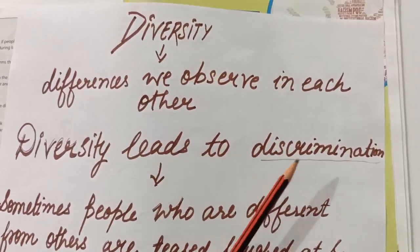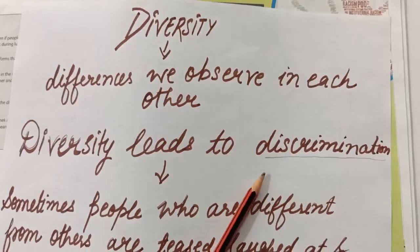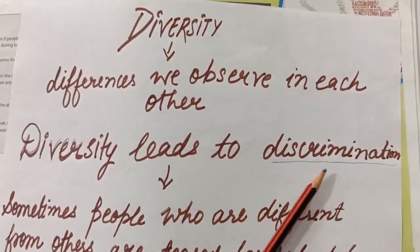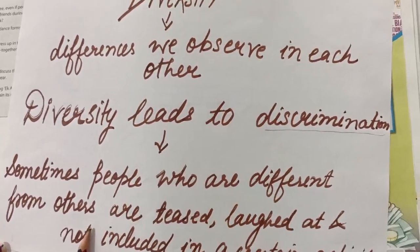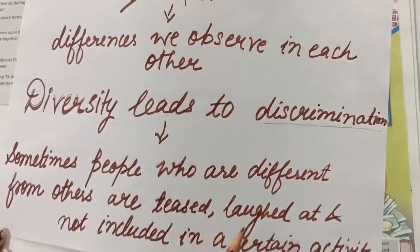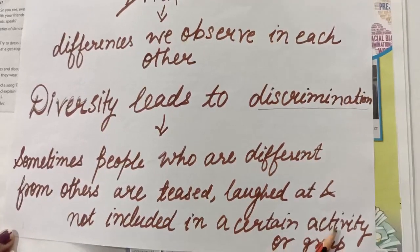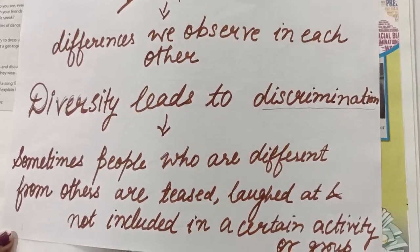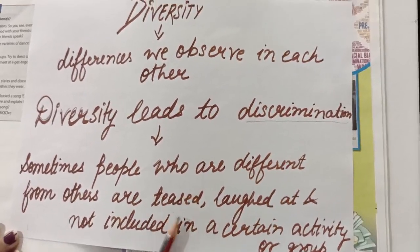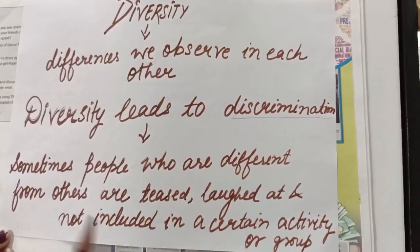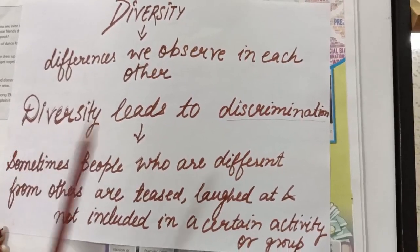So when someone is teased and not included in a certain activity or group, they don't make any part of a certain activity or group. For example, if you have a child who is not made part of the group. So what do you do? You do discrimination with that person. So diversity and differences lead to discrimination.